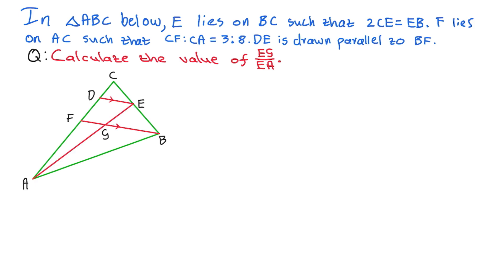We're going to use three steps. The first step is to find ratios on everything, using variables for each ratio. Step two is to find the PLTs — the Parallel Lined Triangles. And the last step is to relate all the ratios with the PLTs while keeping the question in mind.